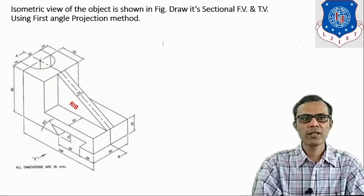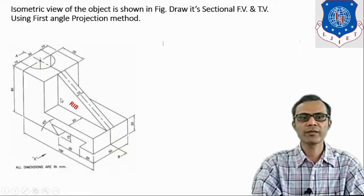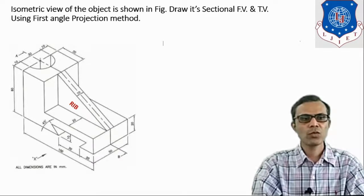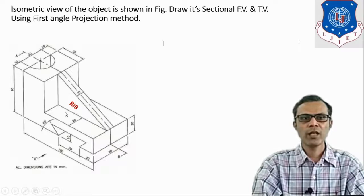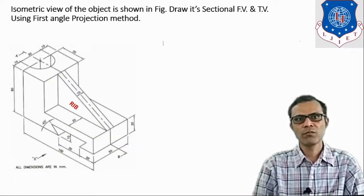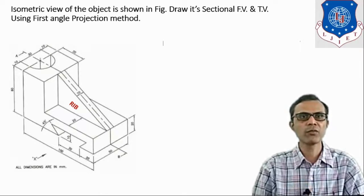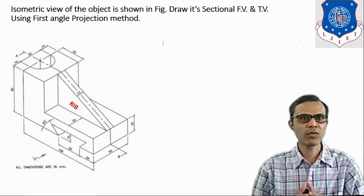The question is: the isometric view of the object is shown in the figure. Draw its sectional front view and top view using the first angle projection method. It is a given three-dimensional object and we have to draw its front view — but not a normal front view. We have to draw its sectional front view and top view using first angle projection method.